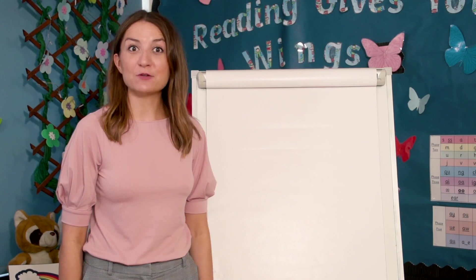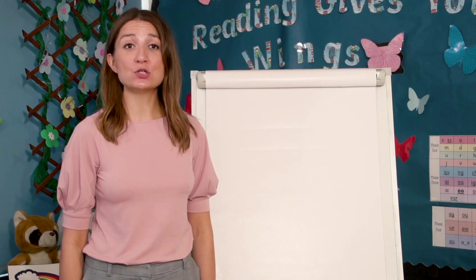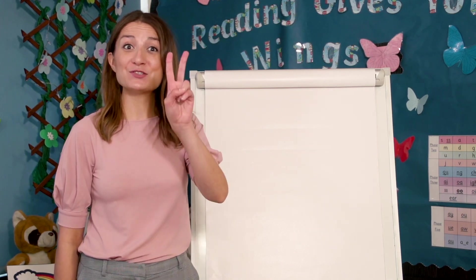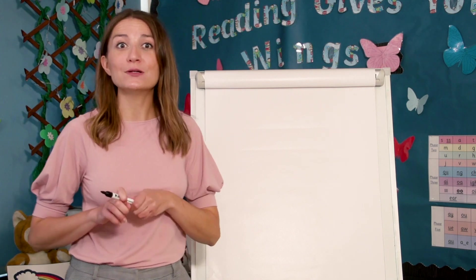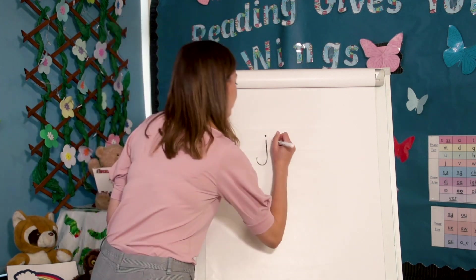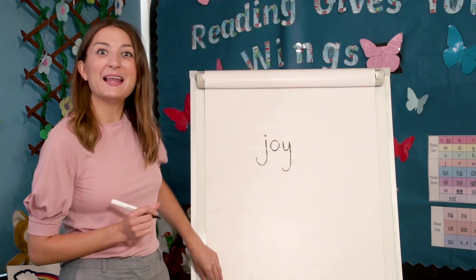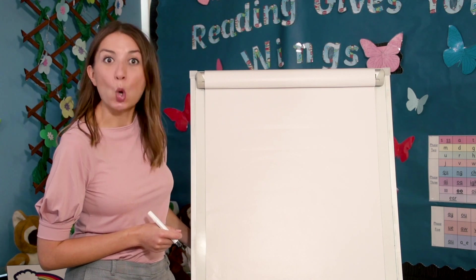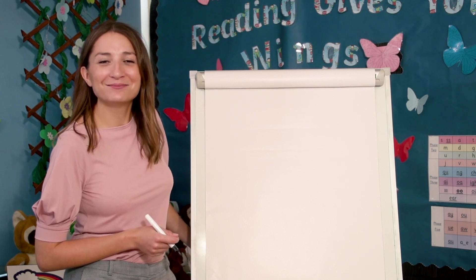Let's spell two words with today's grapheme oy. Let's spell joy. Segment the sounds with me — joy. Let's count how many sounds there are. That's two sounds. Watch me write joy — I need two sounds: j, oy. Let's hide the word. Now you have a go. Say the word, say the sounds, write them down.